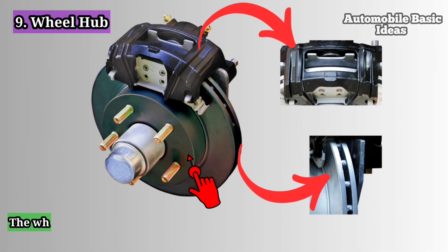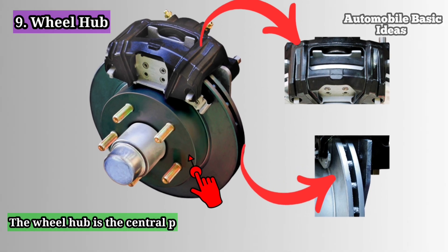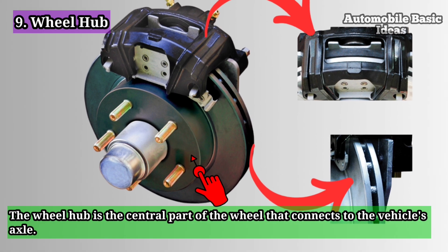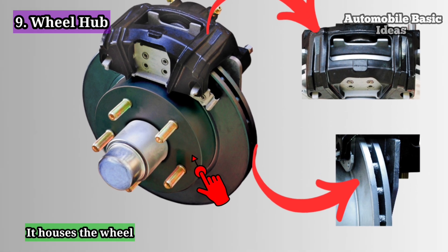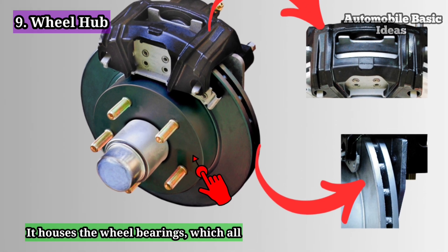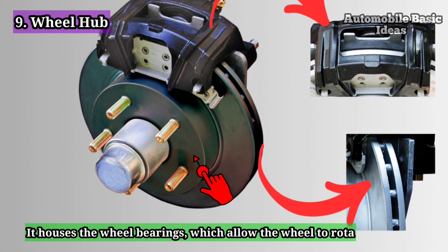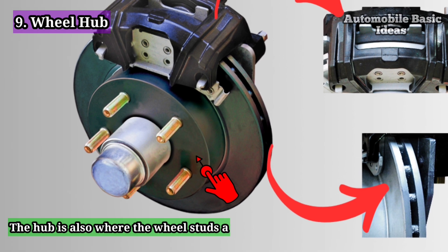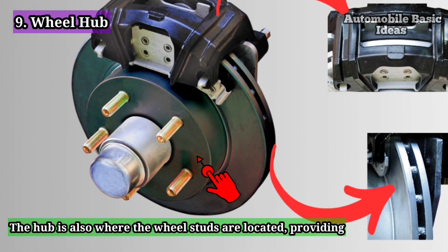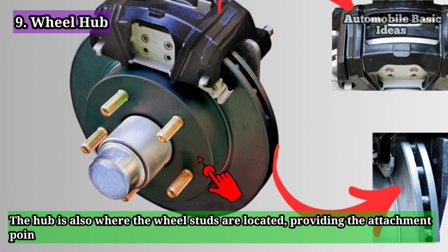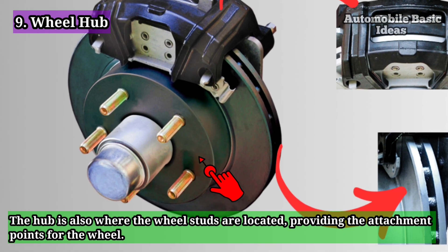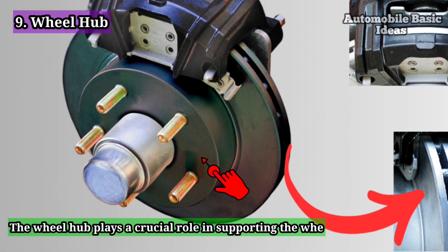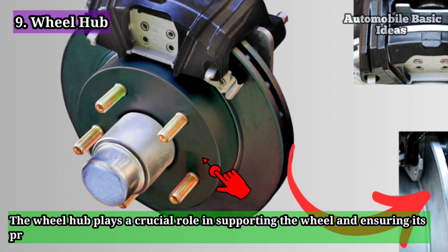Nine: wheel hub. The wheel hub is the central part of the wheel that connects to the vehicle's axle. It houses the wheel bearings, which allow the wheel to rotate smoothly. The hub is also where the wheel studs are located, providing the attachment points for the wheel.